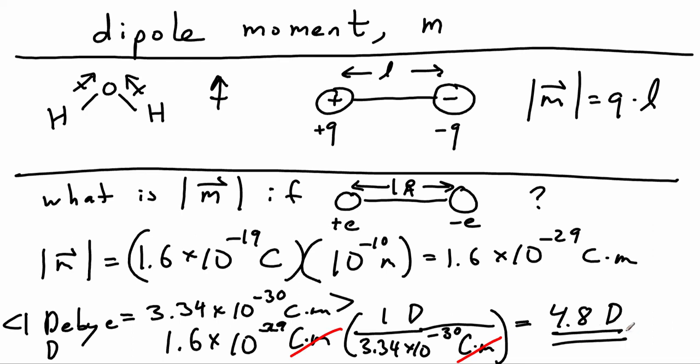So 4.8 debye is a really, really big dipole moment. So most molecules have dipole moments smaller than that because we only have partial charges, not fully developed positive and negative charges on the ends of the dipole.